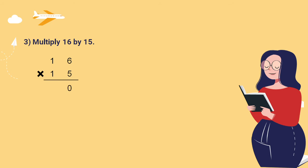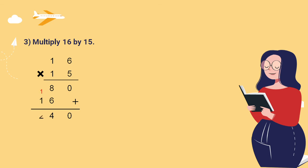Next example: 16 times 15. Working through the steps: 5 times 6 equals 30, write 0 and carry 3. Then 5 times 1 equals 5, plus 3 equals 8. Then 1 times 6 equals 6, write 4 and carry 1. 1 plus 1 equals 2. So 16 times 15 equals 240.